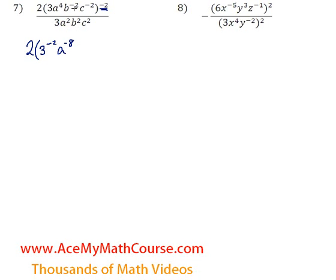b to the power of negative 2 to the power of negative 2 would be b to the 4, and c to the negative 2 to the negative 2 would be again c to the 4, just like the b.